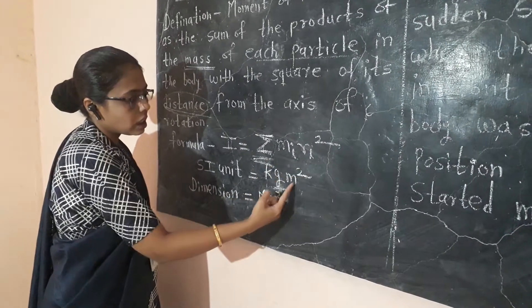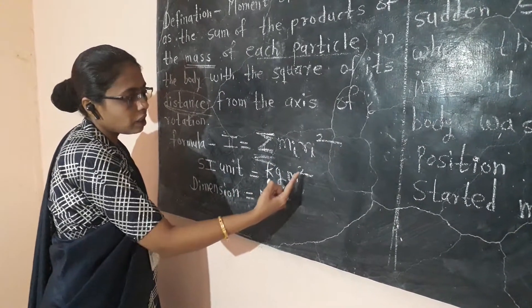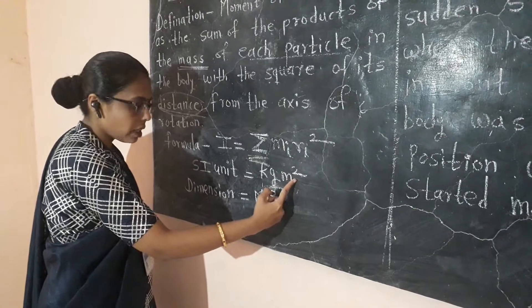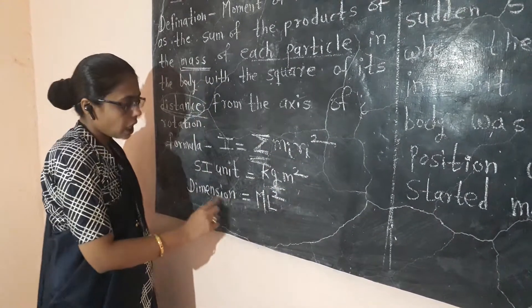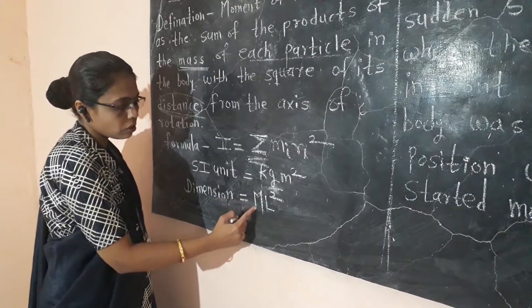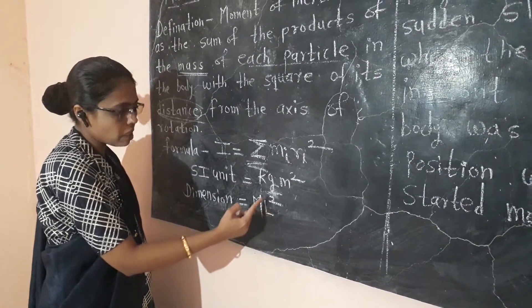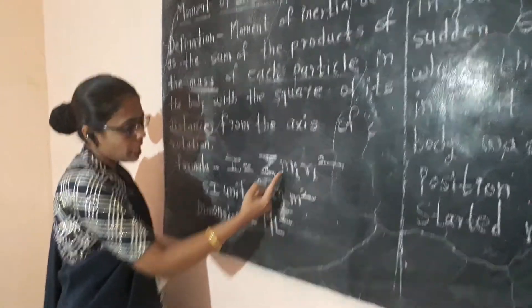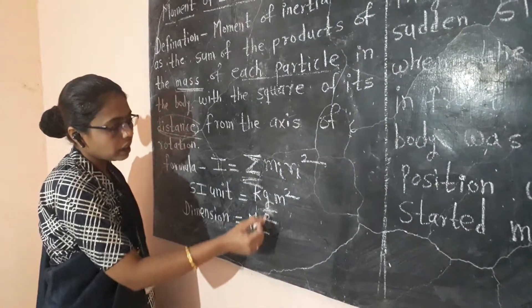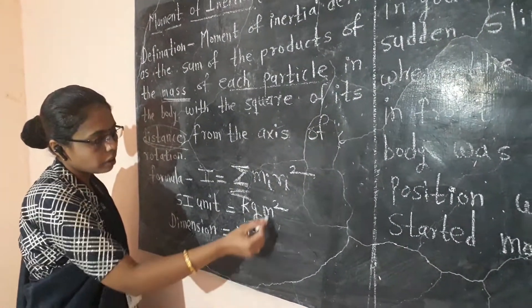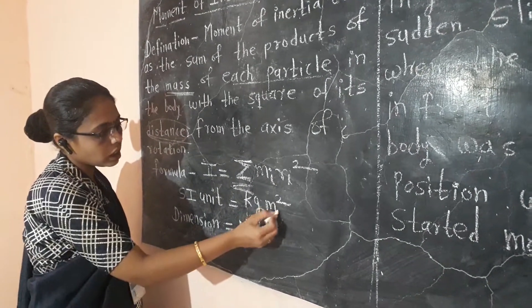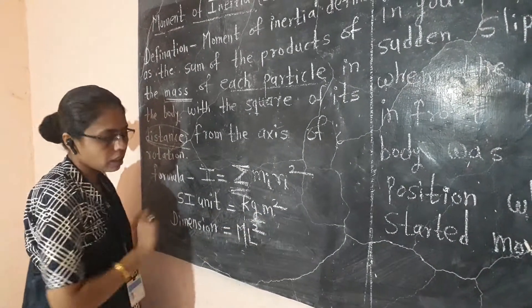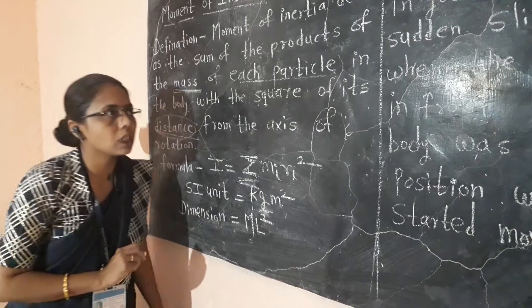The distance is squared. The dimension of moment of inertia is mass times length squared — ML². The dimension is ML².